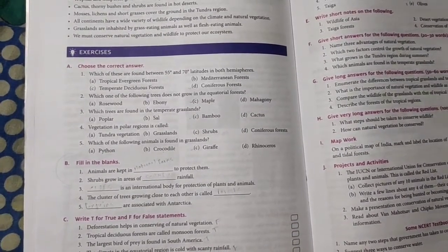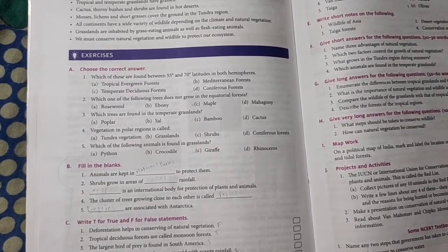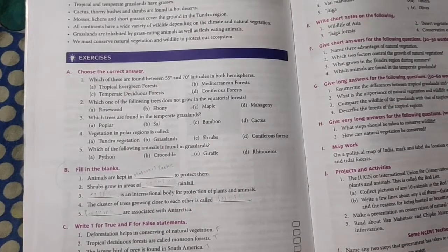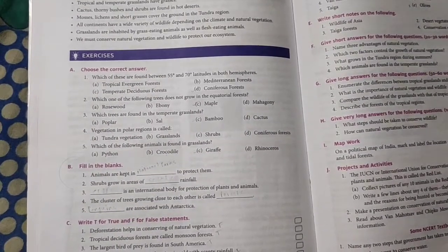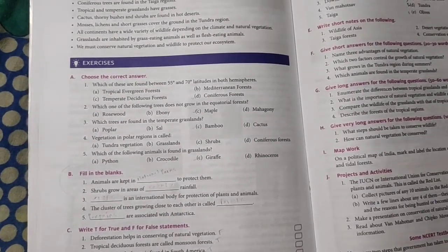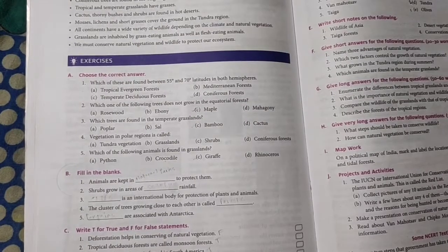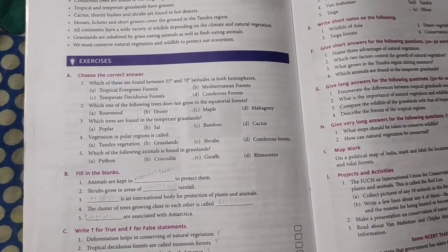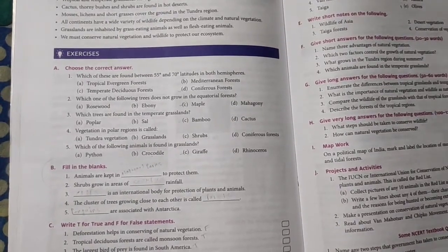Question five: which of the following animals is found in grassland? Python, crocodile, giraffe, and rhinoceros. The answer will be giraffe.